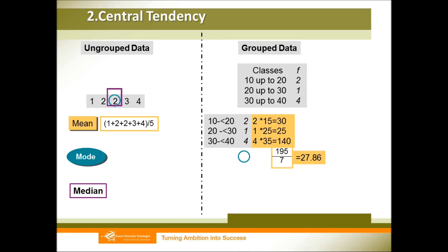For the mode of grouped data, we first identify the modal class — the class with the most numbers. We find that 30 up to 40 is our modal class, and the midpoint of this class is our mode. For the median, it is a little more complicated. We first find the location of the median using the equation (n + 1) divided by 2. We have seven numbers, so 7 plus 1 divided by 2 equals 4. Our median is located at position 4.